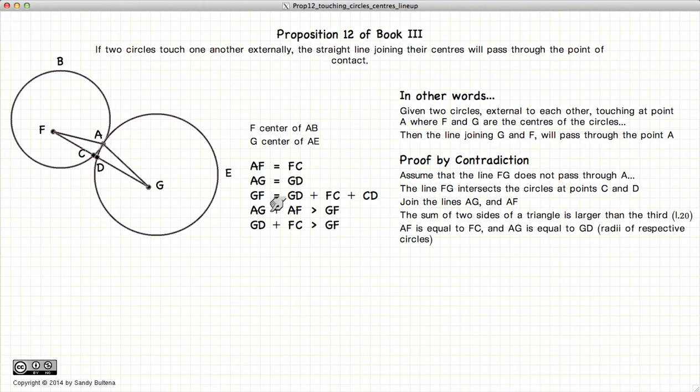However, AG is equal to GD and AF is equal to FC. So we have GD plus FC is greater than GF. So GD plus FC is greater than this whole line here.